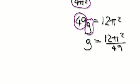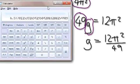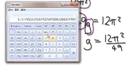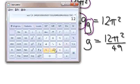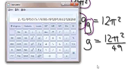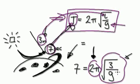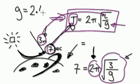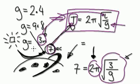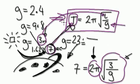So gravity on that mysterious planet is given by G = 12π² / 49. Let's work this out on the calculator: π squared, times 12, divided by 49 — G equals approximately 2.4. For comparison, G on Earth is 9.8, on the Moon it's 1.622, and on Jupiter it's around 23. So this planet's gravity is stronger than the Moon but much weaker than Earth.